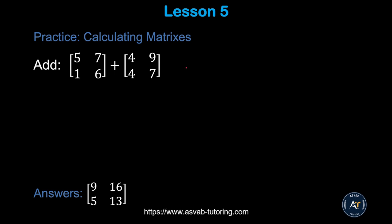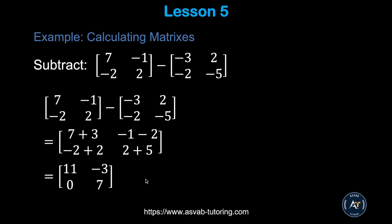There is another practice problem — try it yourself. For matrix subtraction, subtract element by element: 7 minus negative 3 gives 7 plus 3 equals 10; negative 1 minus 2 gives negative 3; and so on. So the result contains 10, negative 3, 0, and 7.